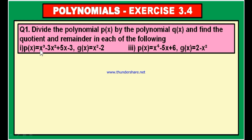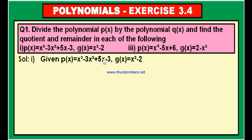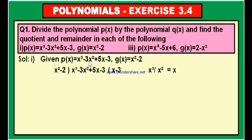Let us solve the first bit now. The polynomial P of X is X cube minus 3X square plus 5X minus 3, and we have to divide this P of X with G of X, which is X square minus 2. So we divide this third degree polynomial with this second degree polynomial. Let us write the dividend X cube minus 3X square plus 5X minus 3, and in the divisor place, X square minus 2.